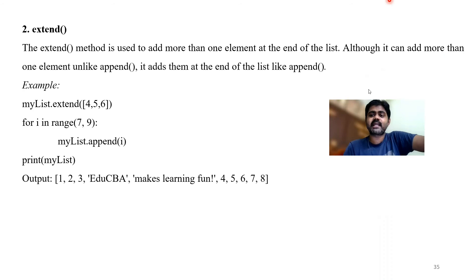Next is count. Count returns how many times an element occurs in the list. For example, my_list.count(3) — in our list, how many times does 3 occur? One, two, three, four, five, six — it occurred 6 times. So count returns 6 for element 3. If I say count(1), it returns 1 since 1 occurred only once. count(2) also returns 1. Whereas 3 occurred 6 times. Note: it's not the index, it checks how many times the element occurred.